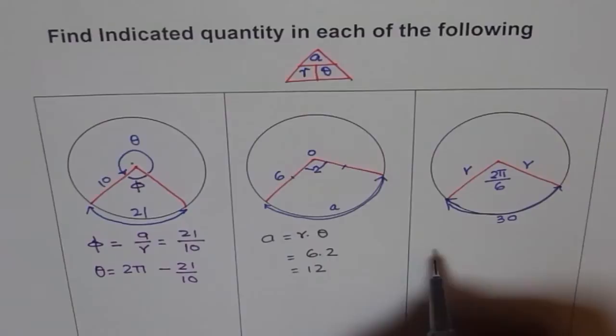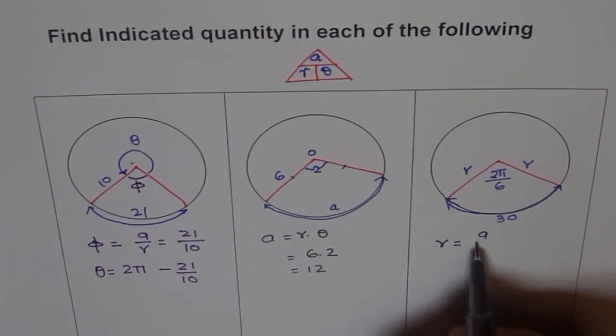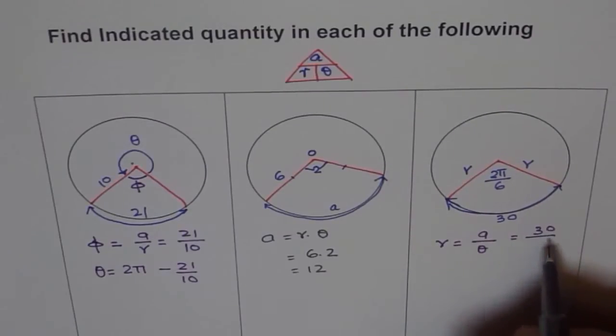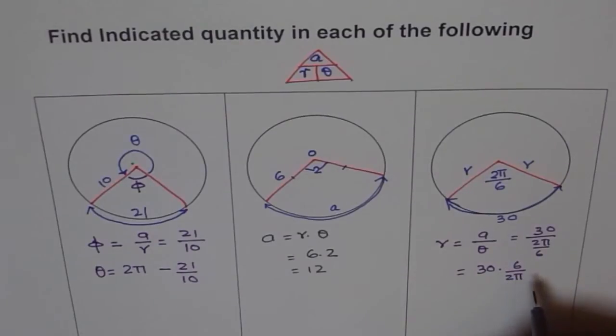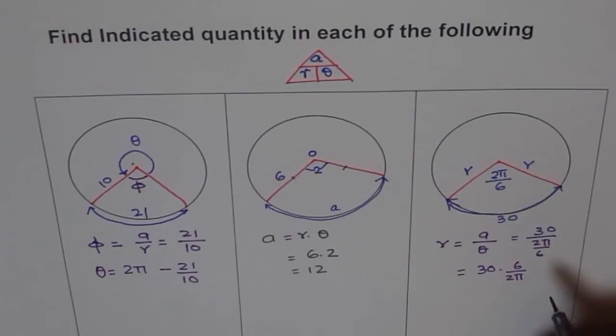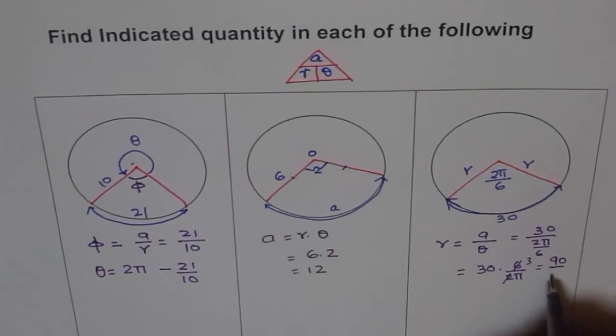So how is R related? R is equal to A over theta. Say R equals to A over theta, where A is arc length 30, and theta is 2 pi over 6. Therefore, R is equal to A over theta. Now, so you can use calculator to find the answer for this also. The exact values. You can simplify. 3. So 90 over pi. So that's how you find R, theta or A given the other two values.